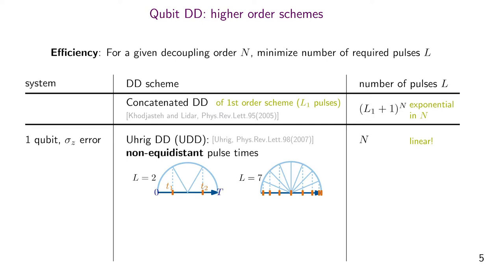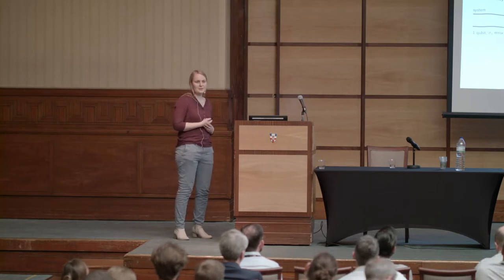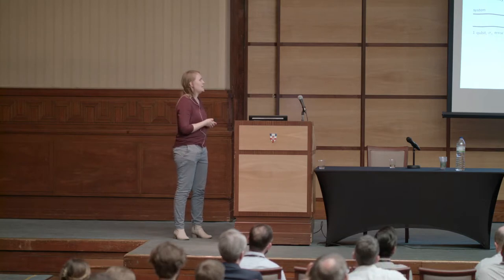If you want to know the pulse times for some given L, you take your time interval, draw a semicircle, divide it into L plus 1 equal segments, and then look for the projections on the x-axis which give you the pulse times. With this you can achieve a linear scaling in N: to achieve Nth-order decoupling you only need N pulses, or N plus 1 for odd N. This is also optimal — if you assume sigma X pulses, this is the optimal scaling you can get.